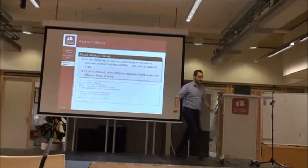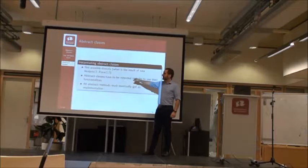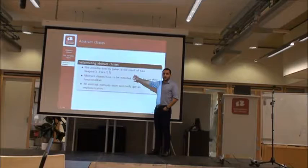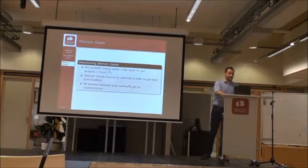Does it make sense? Can you read this piece of code? Is it understandable? This statement — 'new Weapon().fire()' — who says this line works? Who says it doesn't work? It doesn't work, because it's like saying 'new Interface().method()' — you cannot do that.